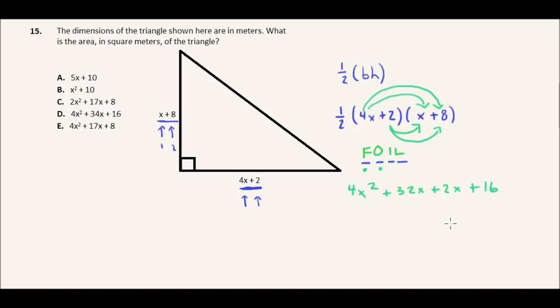And we'll combine the like terms, so we end up with 4x squared, and then with 32x plus 2x, we can combine those because they're similar terms, they both have an x variable at the end, so that's plus 34x, and then again plus 16.